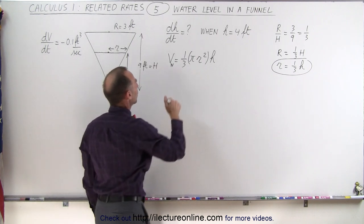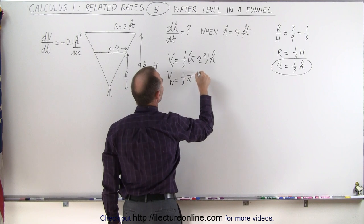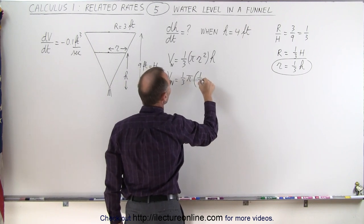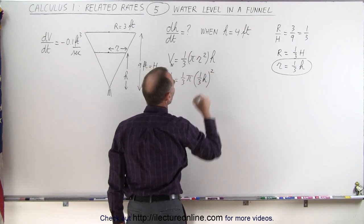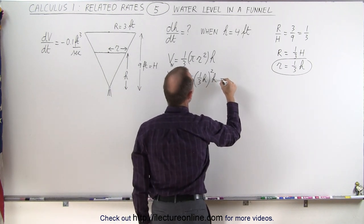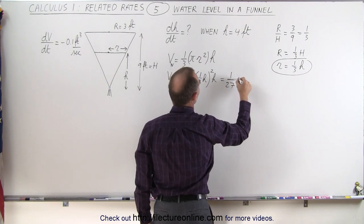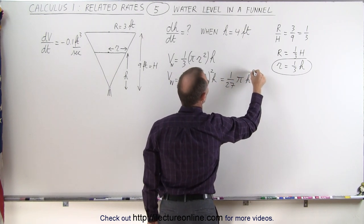When we make the substitution, the volume of the water is equal to one-third pi times one-third h quantity squared times h. Simplifying that equation, this becomes 1 over 9 times one-third or 1 over 27 pi h cubed.